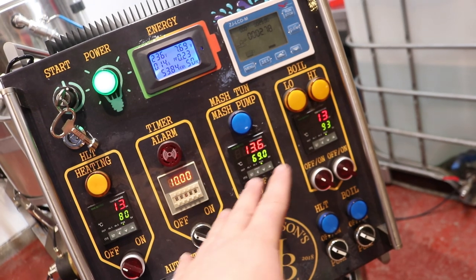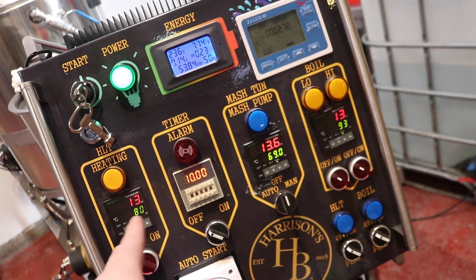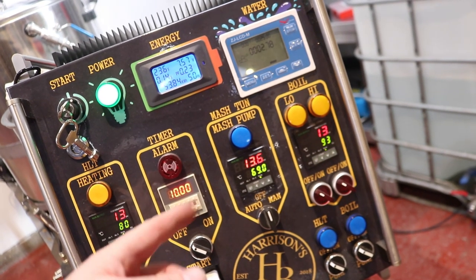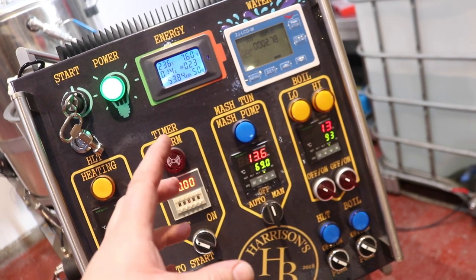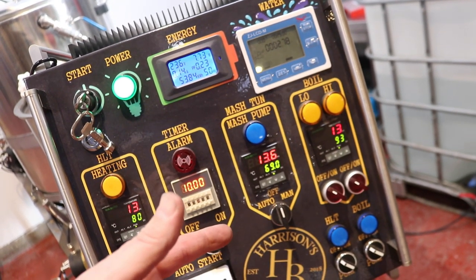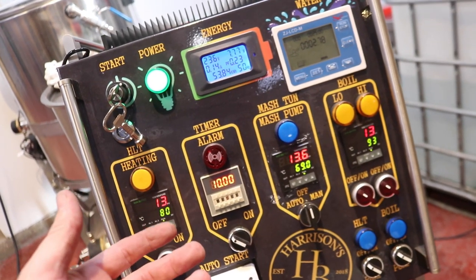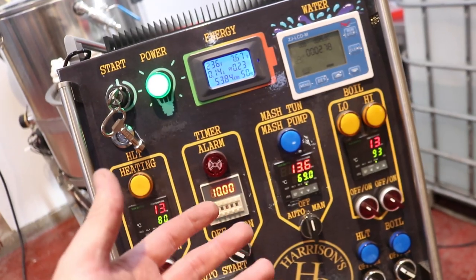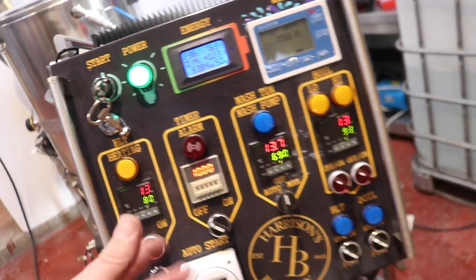I'm guessing that that little jumper cable provides some type of feedback loop so that the PID can figure out what the resistance of the cable is and then calculate the resistance of the thermocouple minus the cable. That's what I think it must be for anyway.